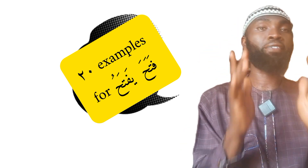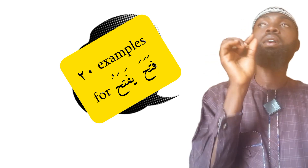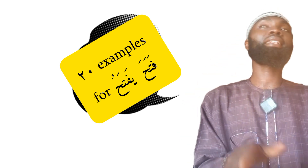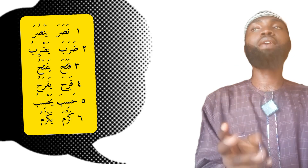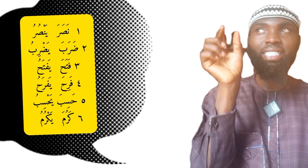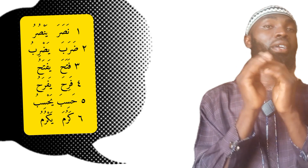We are going to give you 20 verbs which fall under this pattern so that you will know how to form the past tense, present tense, and also the command tenses. The first three patterns of the six patterns, in their past tenses, are the same because they all have fatah. The second letter of nasara has fatah, the second letter of dorraba has fatah, and the second letter of fatah also has fatah. But in the present tense, nasara changes to doma, dorraba changes to kesara, and fatah — the second letter still remains with fatah.